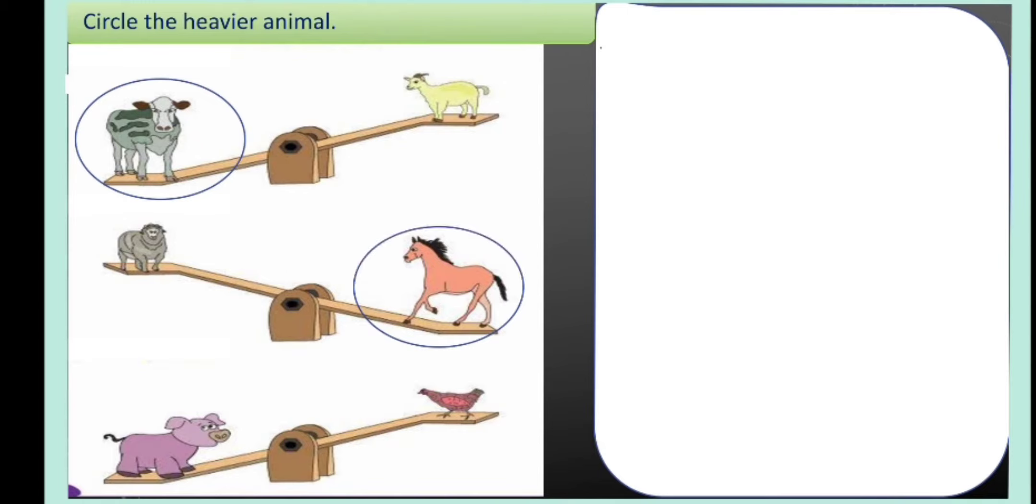The third one, the pig is down and the fowl is up. It shows the pig is heavier. So we circle the pig.